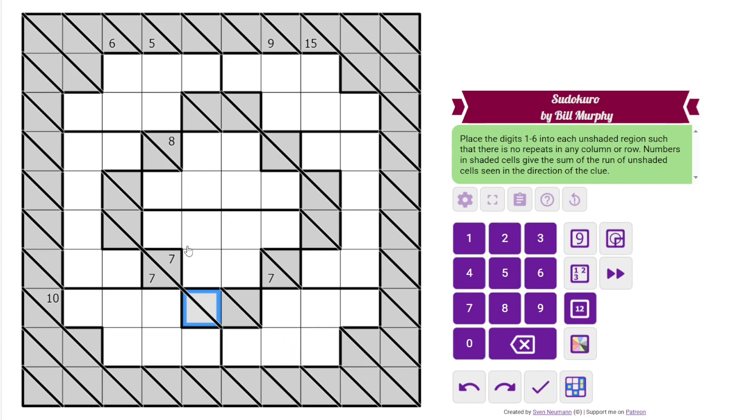However, in this puzzle, we also have Sudoku rules. So Sudoku rules, digits cannot repeat in the same row, even if they aren't connected. So we need to place 1 to 6 in these cells. We also need to place 1 to 6 in these cells, even though there's a gap. Columns are the same, 1 to 6, and then the outline regions.